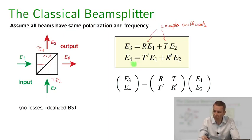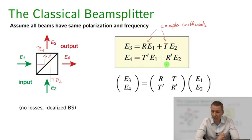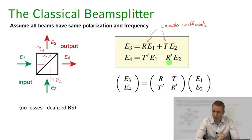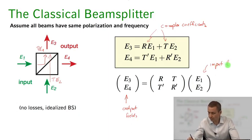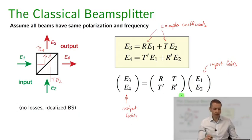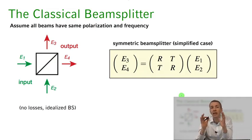A similar relation holds for the light coming out on port e4: that's a transmitted component from port e1 plus a reflected component from port e2. In general these coefficients don't have to be the same — they can be different. So the output fields e3 and e4 are related to the input fields through a transformation matrix.